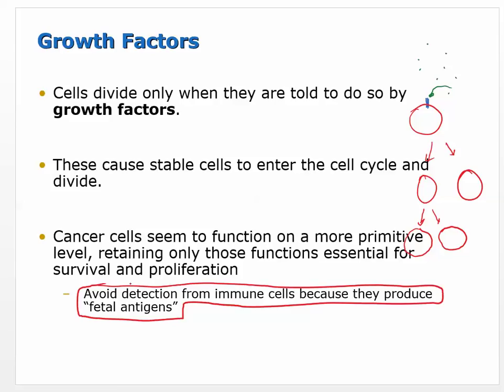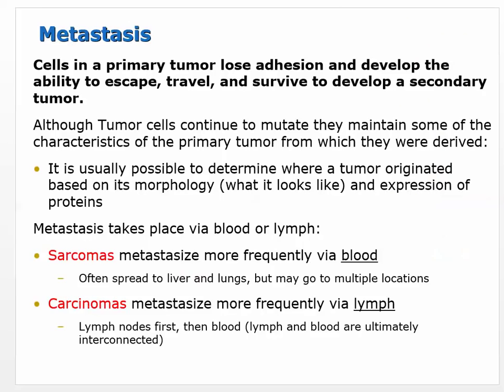Cancer turns back the clock on gene expression, convincing the environment it's just a baby cell. It starts to produce fetal antigens, which signal to cytotoxic T cells that it belongs there. The T cell sees these fetal antigens and moves on, letting those cells continue to divide. So cancer cells avoid immune detection because they produce fetal antigens, and some of those same turned-on genes are also allowing it to keep dividing.